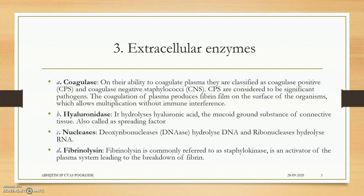The extracellular enzymes include coagulase — they coagulate RBCs when tested. Hyaluronidase is a spreading factor: it breaks the hyaluronic acid in the cell membrane so the bacteria can easily move through the body. Nucleases include ribonucleases and deoxyribonucleases. Fibrinolysin is an extracellular enzyme that can break fibrin and pave the way for spreading of Staphylococcus aureus.